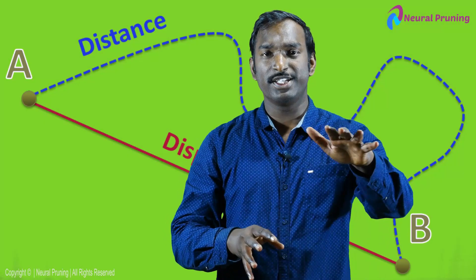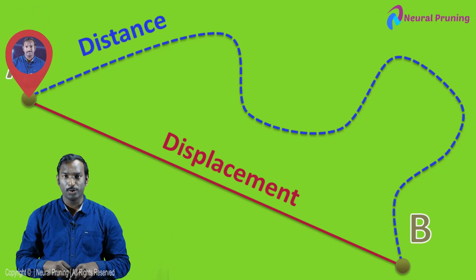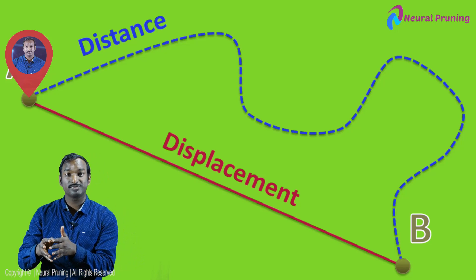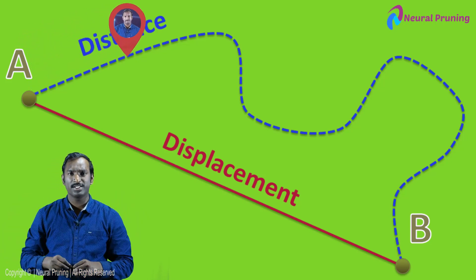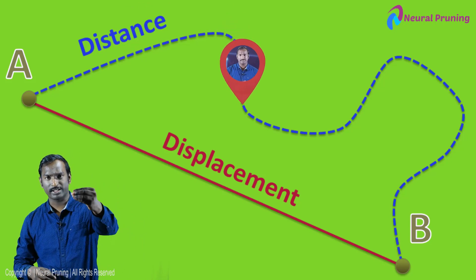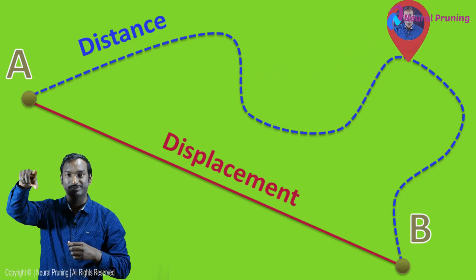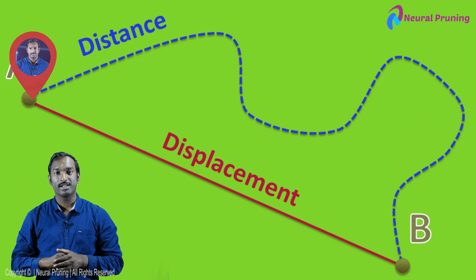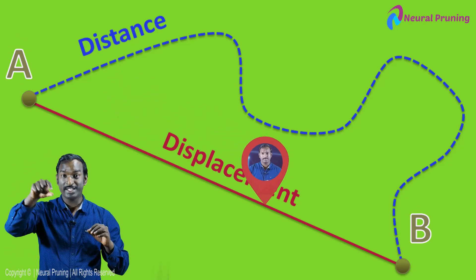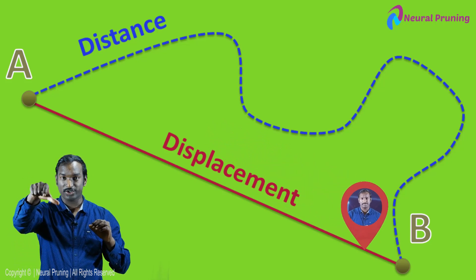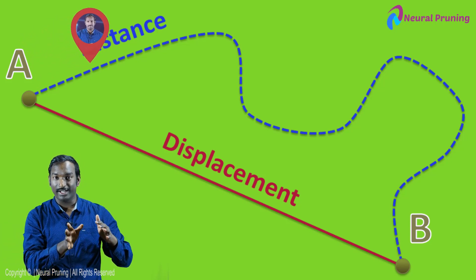Distance and displacement are not the same. Distance means the total path — for example, if you start from your house, go to your friend's house, then to some other place, then to school, that total path is the distance. Displacement is the shortest path — from your house directly to school. Distance is a scalar quantity; displacement is a vector quantity.